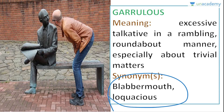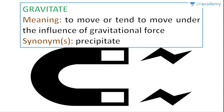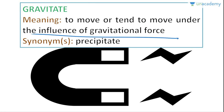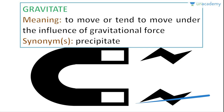Next, gravitate means to move or tend to move under the influence of gravitational force. Just remember that how gravity pulls objects towards earth, gravitate describes how people are pulled towards things they like. Little kids gravitate towards playgrounds, somebody athletic will gravitate towards sports. In an example: people tend to gravitate towards the most outgoing person at a party — you automatically get attracted or pulled by that thing or force.